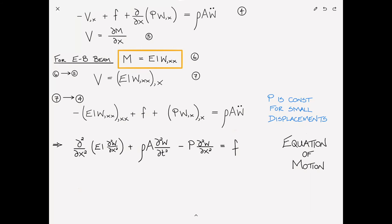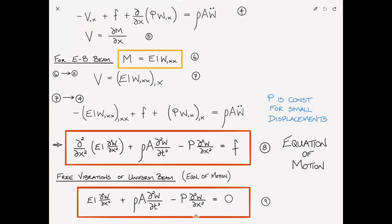We can simplify it further for our purposes by assuming the free vibrations of a uniform beam. The free vibrations will knock out the F on the right-hand side, and the fact that it's uniform means EI is constant, so I can bring that outside of the derivative. I end up with EI times the fourth derivative of W with respect to X plus rho A d squared W dt squared minus P d squared W dx squared equals zero. That is it, we're done with our equations of motion. This is number nine, and I'm going to put red boxes around this because this is what we've tried to solve.